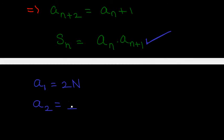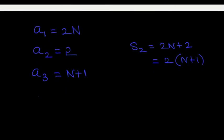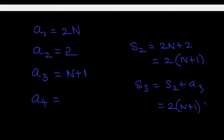Let us try a2 equals 2. This divides 2n, and S_2 equals 2n plus 2, which is 2 times (n+1). So a3 can be n+1. Now consider a4: it should divide S_3. S_3 equals S_2 plus a3 equals 2(n+1) plus (n+1) equals 3(n+1). We can take a4 to be 3.